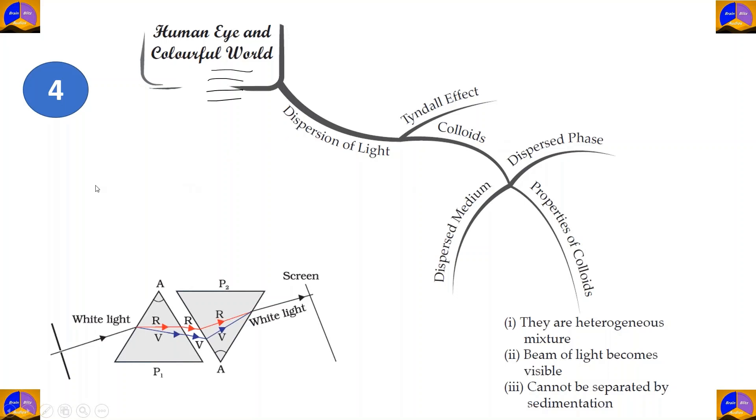In dispersion of light, when light rays travel through a colloid, they are visible as light rays. This effect of light rays being visible is known as the Tyndall effect. Now, more about colloids. Colloids have two parts, dispersed phase and dispersed medium. Both of these can be solid, liquid or gas. Depends on the type of colloid that's used.